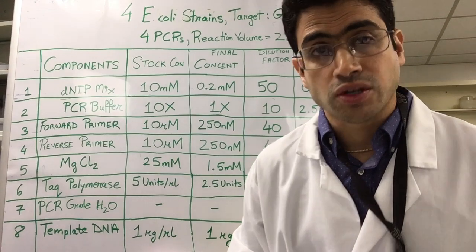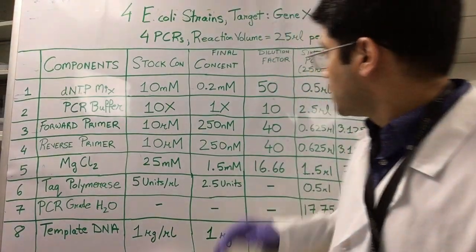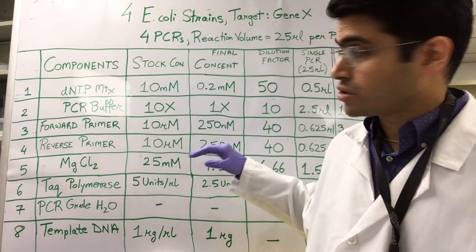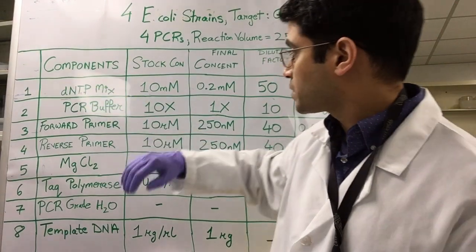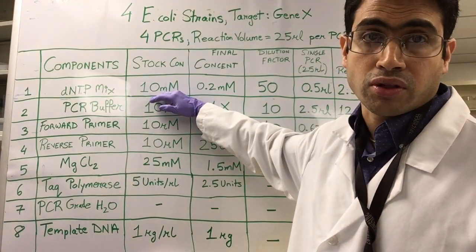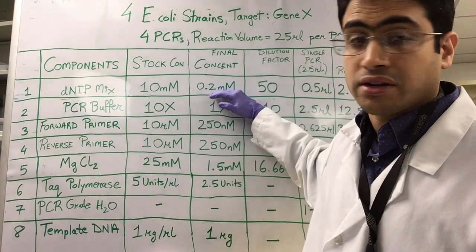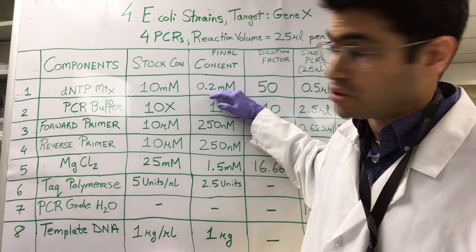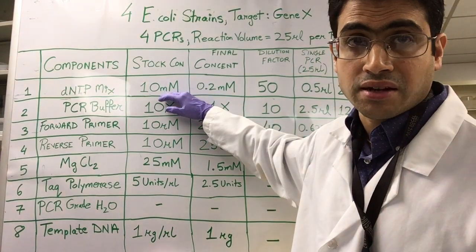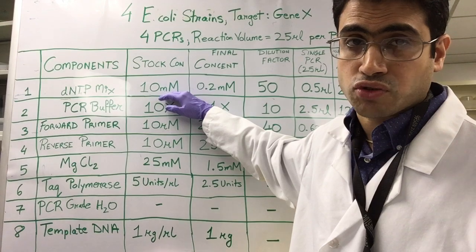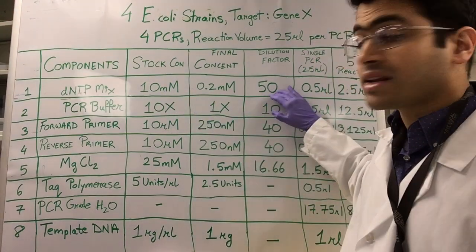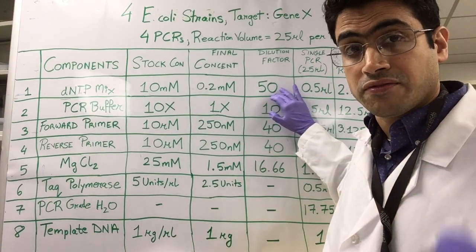So for that, you calculate the dilution factor. Let's do that for the first ingredient, the DNTP mix. We have a 10 millimolar working stock. The final desired concentration is 0.2. So if you take the 10 millimolar stock divided by the desired concentration of 0.2, that gives you a dilution factor of 50.